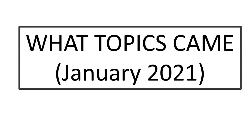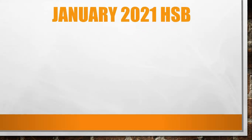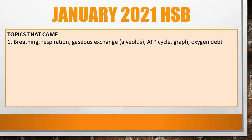Now let's look at the topics that came on the January 2021 papers for both human and social biology and biology. For the human and social biology paper, the first question was on breathing and respiration — they had a diagram of the alveolus, a question on the ATP cycle, and a graph dealing with oxygen depth and exercise.